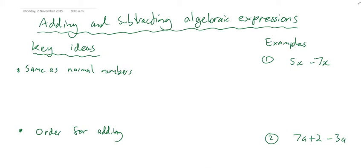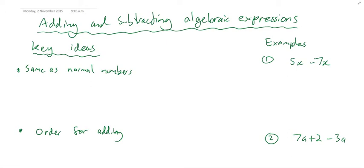This is about adding and subtracting algebraic expressions. One of the key ideas is to realize that algebra is the same as normal numbers — it's just a general way of writing normal numbers. We look at what happens to normal numbers and try to write things in the same way.